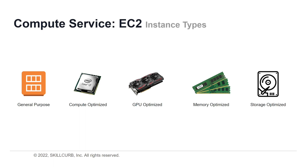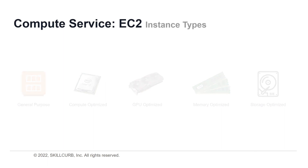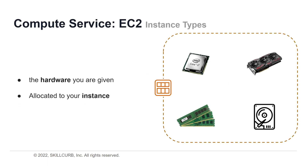When it comes to the type of instance you can have in EC2, there are a bunch of options available within Amazon AWS. You can have a general purpose instance, or one that is compute optimized, graphics optimized, memory optimized, or even storage optimized. The instance type is basically just the hardware allocated by AWS to run your instance.